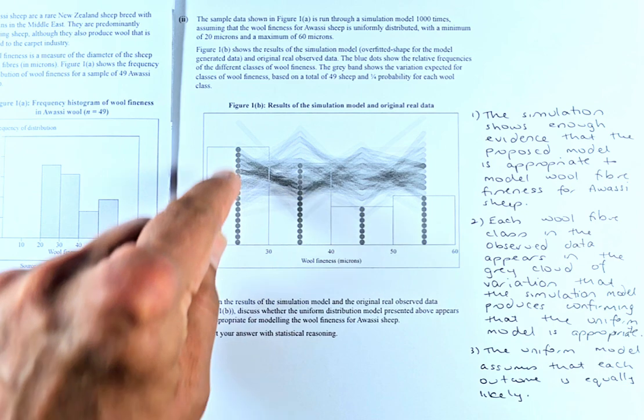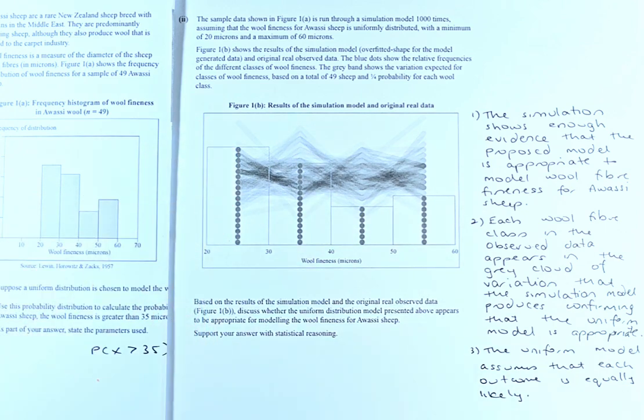The blue dot, the little circle, has no colour in my printer. So it shows the relative frequency of the different classes of the wool fineness.